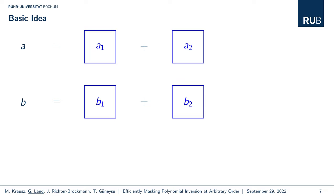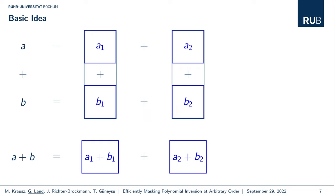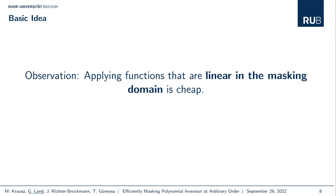This idea translates directly to arithmetic masking. We have two secret values a and b split into additive shares a1, a2 and b1, b2 such that a1+a2=a and b1+b2=b. To secretly compute a+b, the new first share is a1+b1 and the other share is a2+b2. When we add them up, we yield the correct result. The key observation is that functions linear in the masking domain are very cheap. The big question is: in which masking domain is polynomial inversion linear?